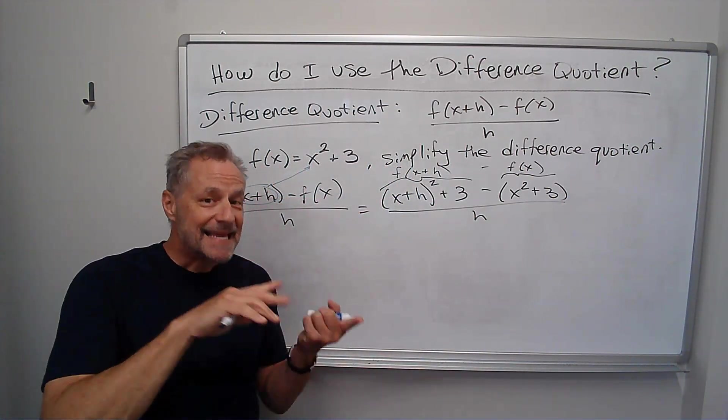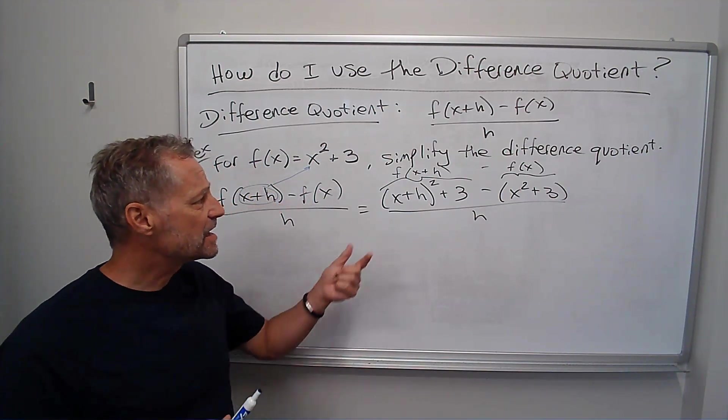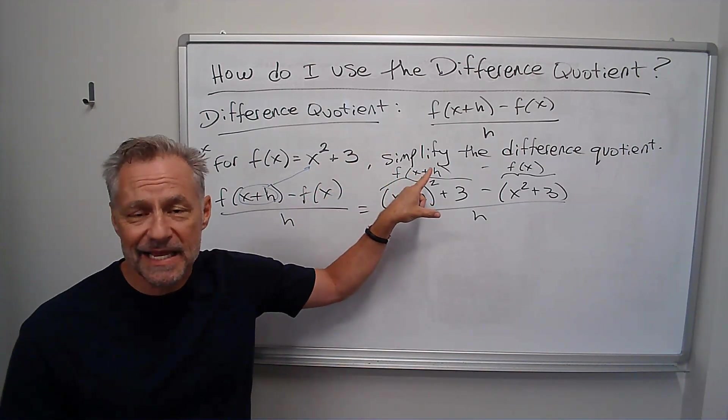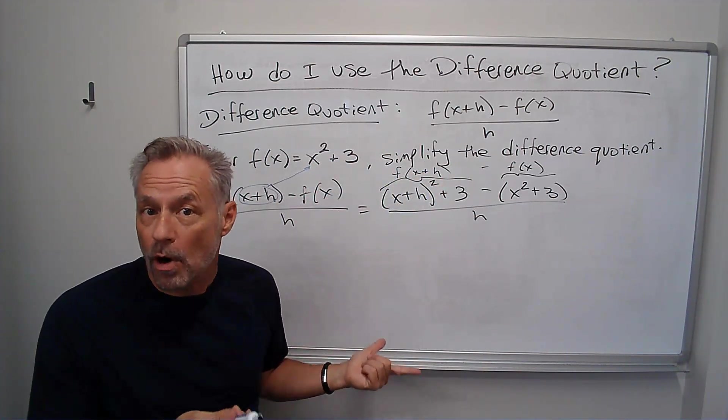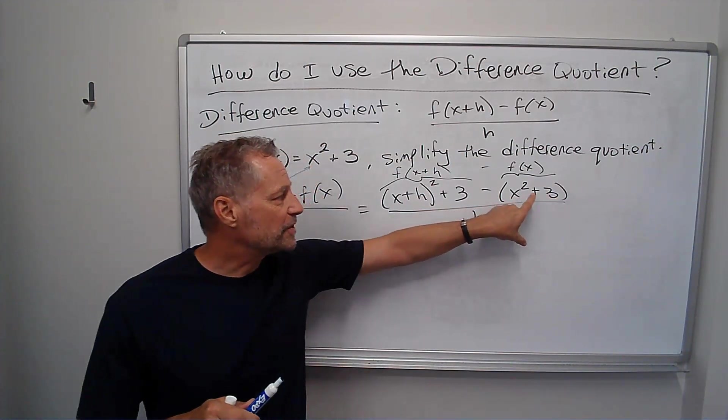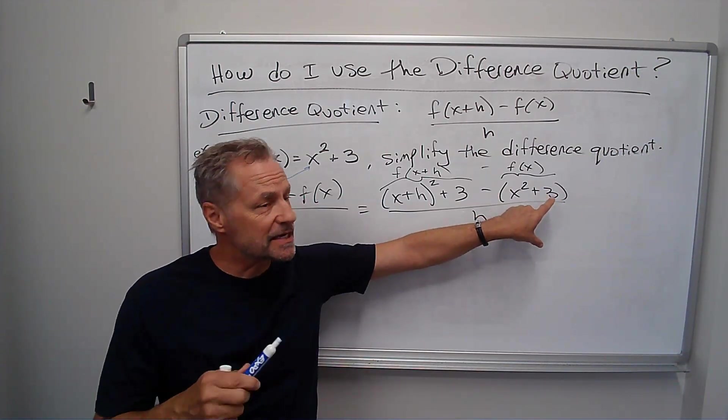Okay, so the key things where I see students make mistakes, if and when they make a mistake, is one, they don't put the x plus h in there. They try to put the plus h at the end, which is something completely different and wrong. Or, they forget to put this in parentheses and forget to distribute the negatives on it. You're going to need to do that to get the right answer.